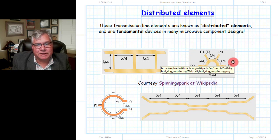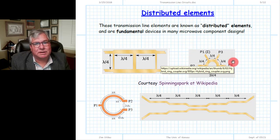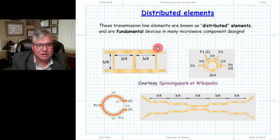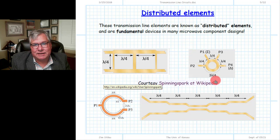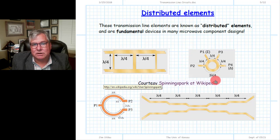We could terminate a transmission line of some length with a short or open and create a one-port device of a given reactance. We could also take a length of transmission line — a reactive two-port device — and generate an impedance matrix useful for some circuit design. That's typically how we do microwave engineering, and it's what differentiates microwave engineering from circuit design at lower frequencies where we might use lumped inductors or lumped capacitors. When we look at microwave engineering circuits, they look confusing at first because they simply look like lengths of conductors — wires. At high frequencies, the inductance and capacitance per unit length will be significant, and we handle that with telegrapher equations.